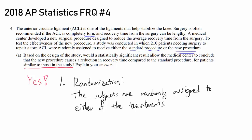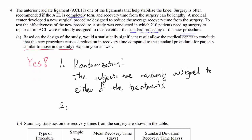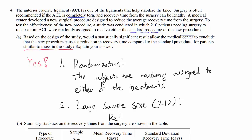Randomization is very important in an experiment for you to get statistically valid results. The second reason is the large sample size — in our case, 210. This large sample size is going to reduce the natural variation in the results, and these two factors allow the conclusions to be statistically acceptable.